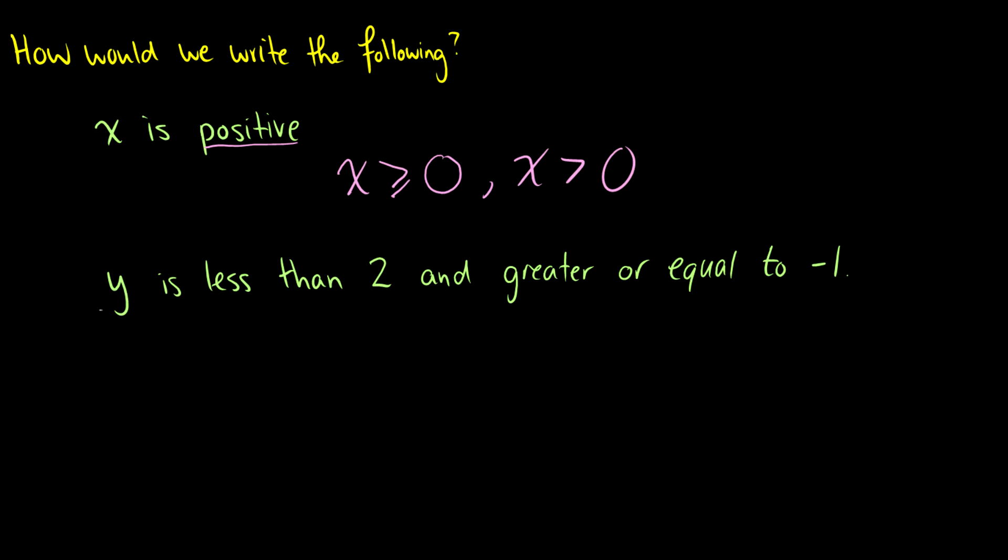Okay so x is positive we say x is greater or equal to 0. What if y is less than 2 and greater or equal to negative 1? We have this and here so that means we can break it into components. So y is less than 2. How do we write that? We say y less than 2. And y is greater or equal to negative 1. So that's going to be y is greater or equal to negative 1.